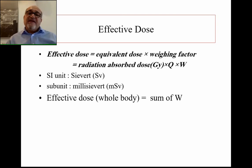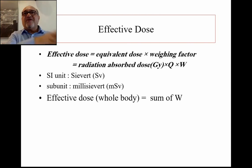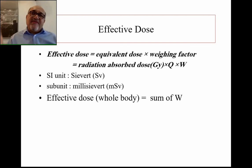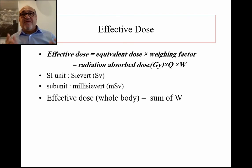The standard international unit for effective dose is the sievert, with sub-units of millisieverts and microsieverts. The effective dose for the whole body is the sum of the effective doses for all individual tissues — gonads, bone, and so on — added together. In practice, the effective dose is usually reported for the whole body rather than specified per individual tissue.